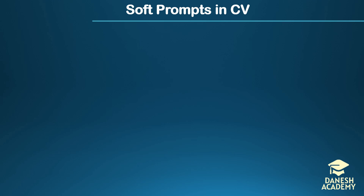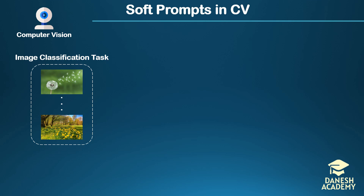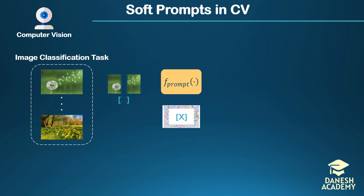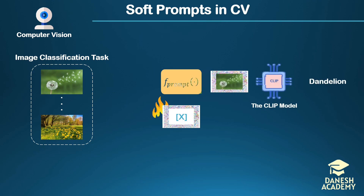The definition of soft prompts in computer vision can vary somewhat. For instance, in an image classification task, some researchers suggest that the template function used to construct the prompt can be a frame around the instance image. The pixels within this frame are tunable, and updating them to improve downstream task performance constitutes prompt tuning in computer vision.